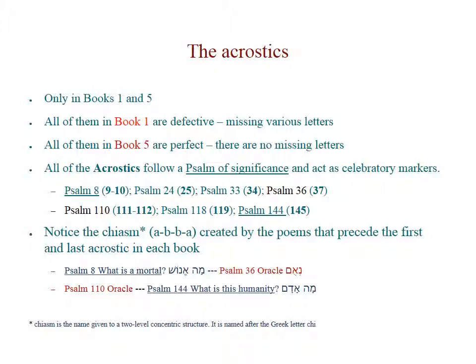If we look at the poems just prior to each acrostic, it appears that each acrostic follows and celebrates a psalm of significance. So we highlight Psalm 8, 24, 33, and 36 in Book 1, and in Book 5, Psalm 110, 118, and 144 — seven psalms all together.